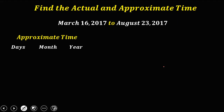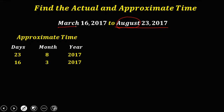To solve for the approximate time, we use the day-month-year method. Start with August 23, 2017: days 23, August as a number is 8, year 2017. Then March 16: days 16, March as a number is 3, year 2017. Subtract: 23 minus 16 equals 7, then 8 minus 3...